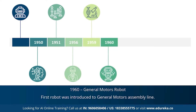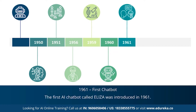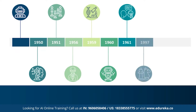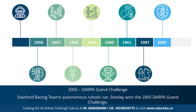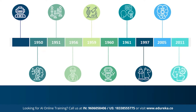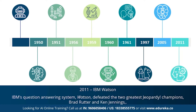In 1960, the first robot was introduced to the General Motors assembly line. In 1961, the first AI chatbot called Eliza was introduced. In 1997, IBM's Deep Blue beat the world champion Garry Kasparov in chess. 2005 marks the year when an autonomous robotic car called Stanley won the DARPA Grand Challenge. In 2011, IBM's Watson defeated the two greatest Jeopardy champions, Brad Rutter and Ken Jennings. So that was a brief history of AI.